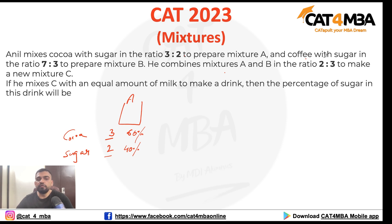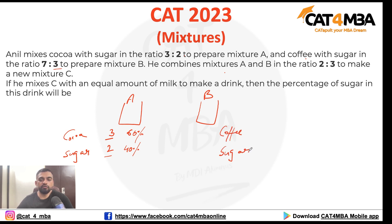Next, he mixes coffee with sugar in the ratio 7 to 3 to prepare Mixture B. So Mixture B has coffee and sugar in the ratio 7:3. Coffee is 7 parts out of 10, which is 70%, and sugar is 3 parts out of 10, which is 30%.